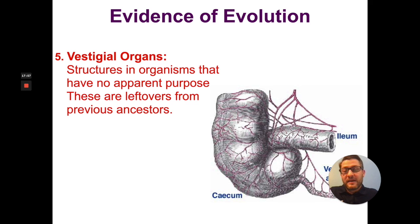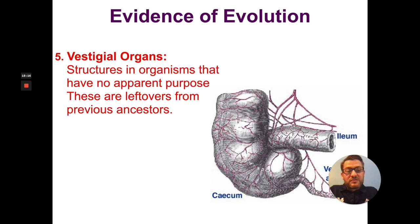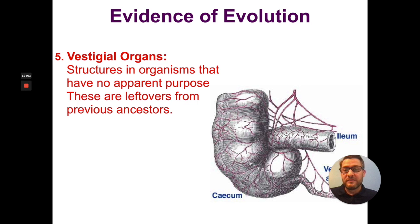That actually brings us to the next piece of evidence for evolution: vestigial organs. A vestigial organ is a structure in the body that has no apparent purpose. It is thought that vestigial organs are basically leftovers from previous ancestors. In humans, there's a structure known as the appendix, attached to your digestive system on your large intestines. The appendix doesn't really do a whole lot in the body, but it is thought to date back to when humans had a more primitive diet. Today, the appendix is basically just a leftover piece of anatomy without much purpose inside our body.